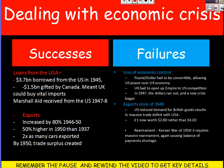Dealing with the economic crisis, they had some successes. They borrowed $3.7 billion from the USA in 1945 and were also given $1.5 billion by Canada, meaning the UK could buy vital imports and keep itself going. Marshall Aid, a US programme to give money to European countries, was also received in 1947-48. They also increased exports by 80% between 1946 and 1950 — 50% higher than before the war in 1937. Twice as many cars were exported after the war, and by 1950 a trade surplus had been created.